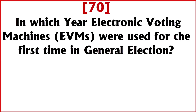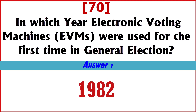In which year were electronic voting machines, EVMs, used for the first time in a general election? Answer: 1982.